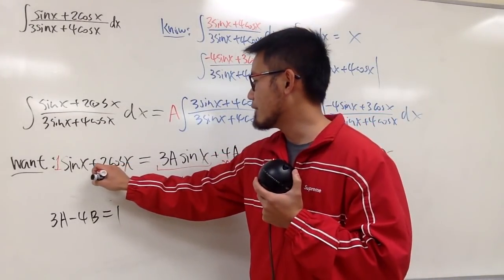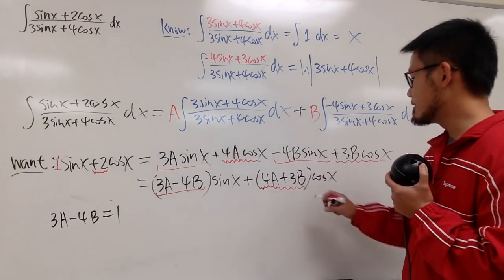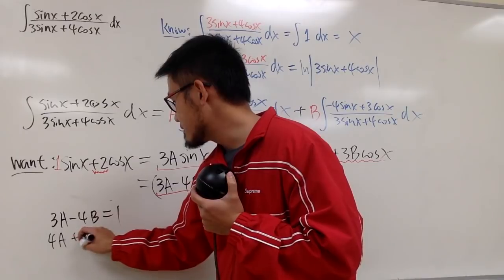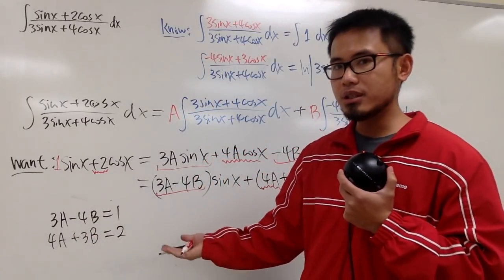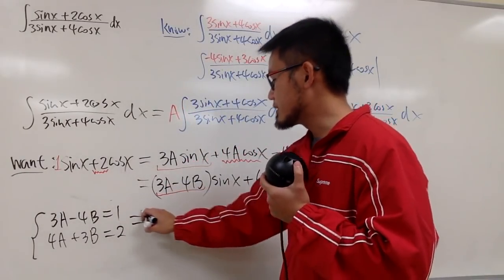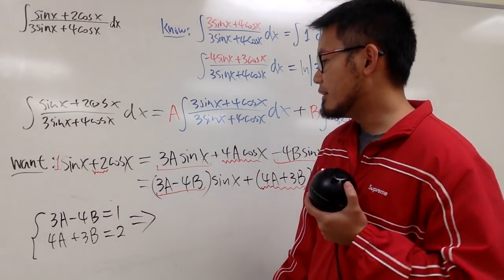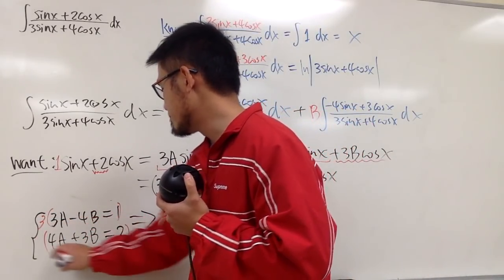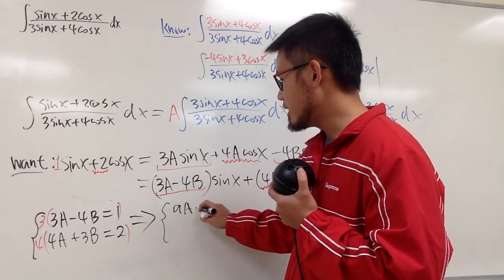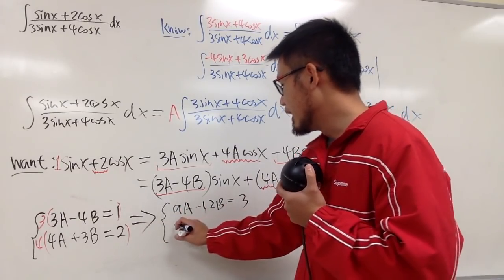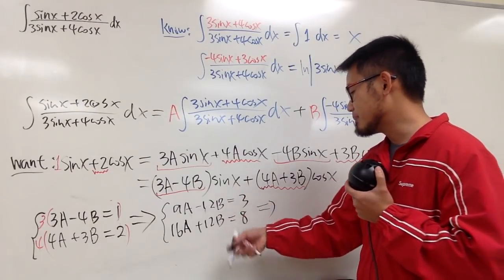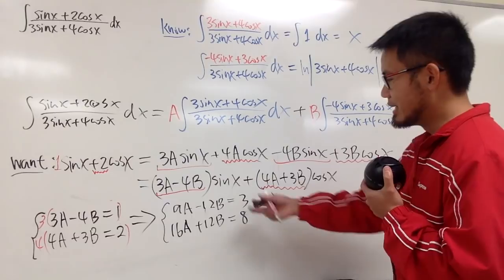And secondly, this right here, we have a 2. And this right here is 4a plus 3b, right? So that means this guy has to be the same as 2. Let me just put this down. 4a plus 3b has to be 2. And you see, it is possible to actually find a and b to make this happen. And we just have to solve the system of equations. So this is pretty nice. And let me just go ahead and multiply everything by 3 on the top and multiply everything by 4 on the bottom. So that way, I will have negative 12b and then positive 12b. And then we'll just do this real quick. So this is 9a minus 12b equals to 3. And then 16a plus 12b equals to 8. And you can just combine these two equations by adding them up.